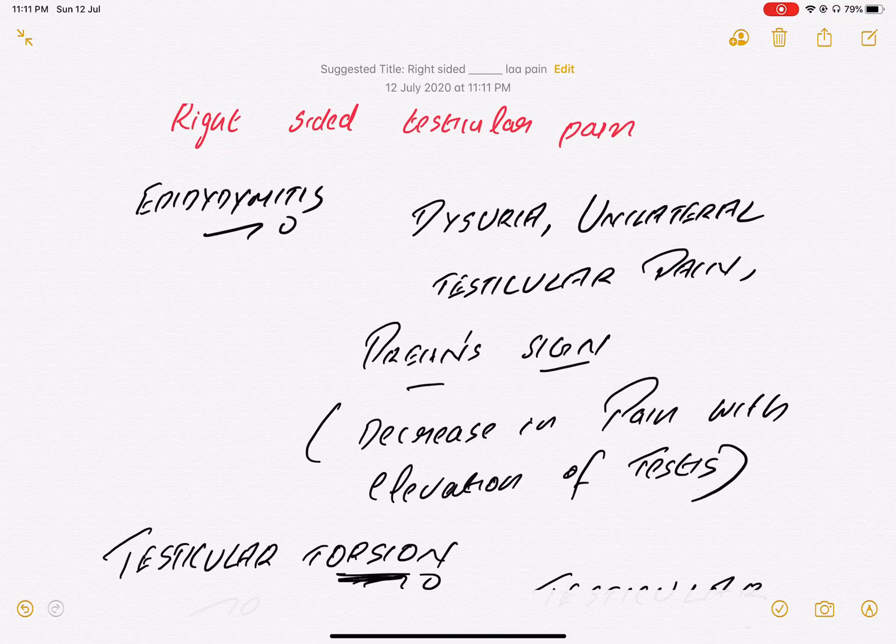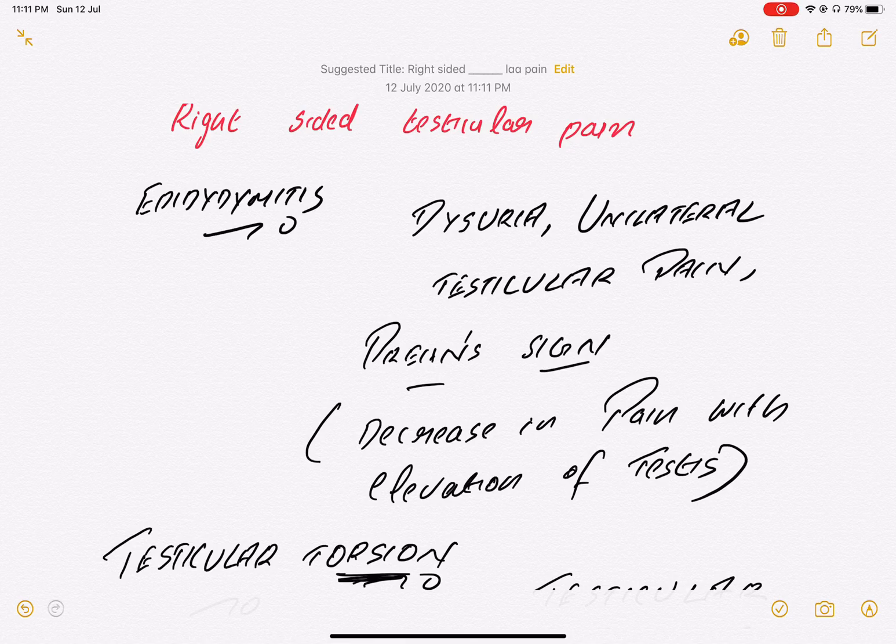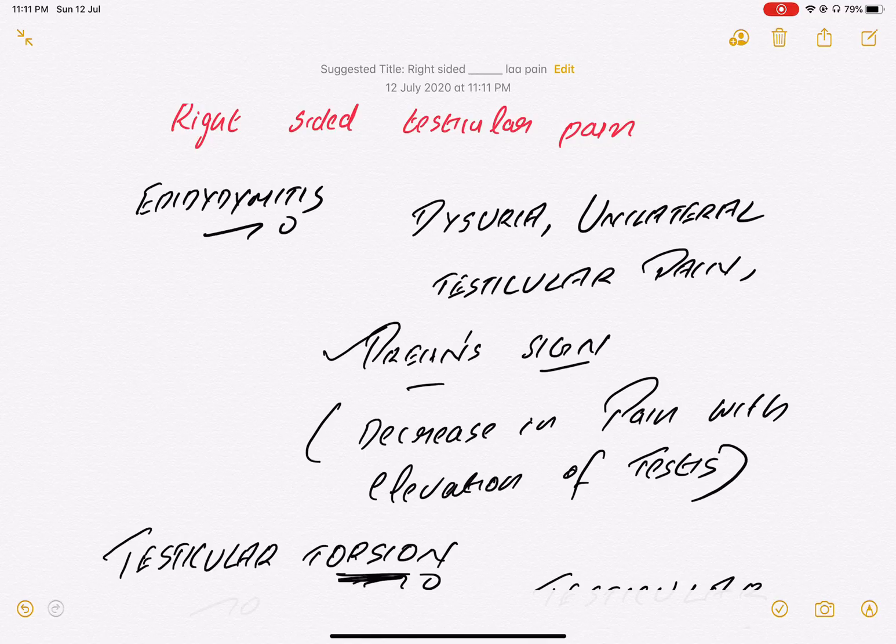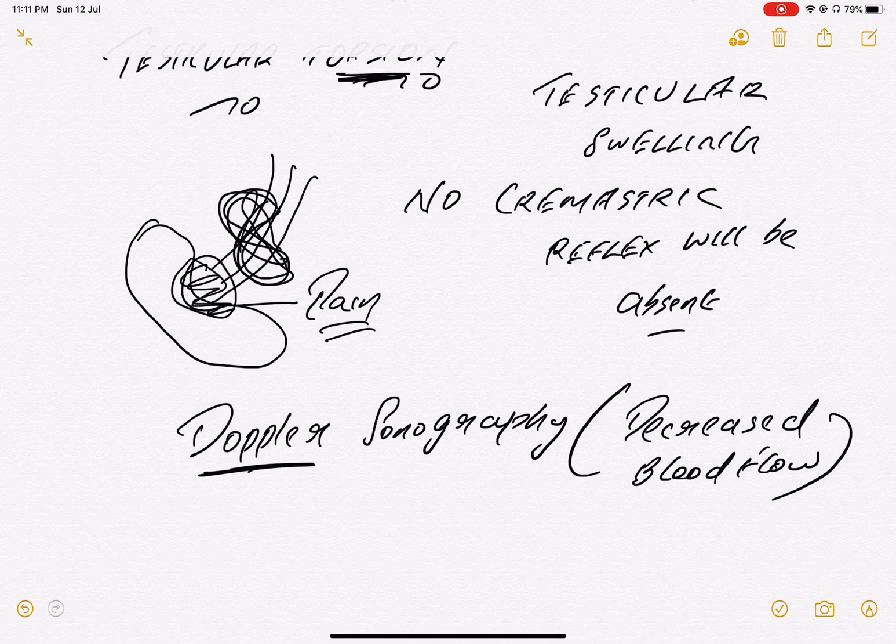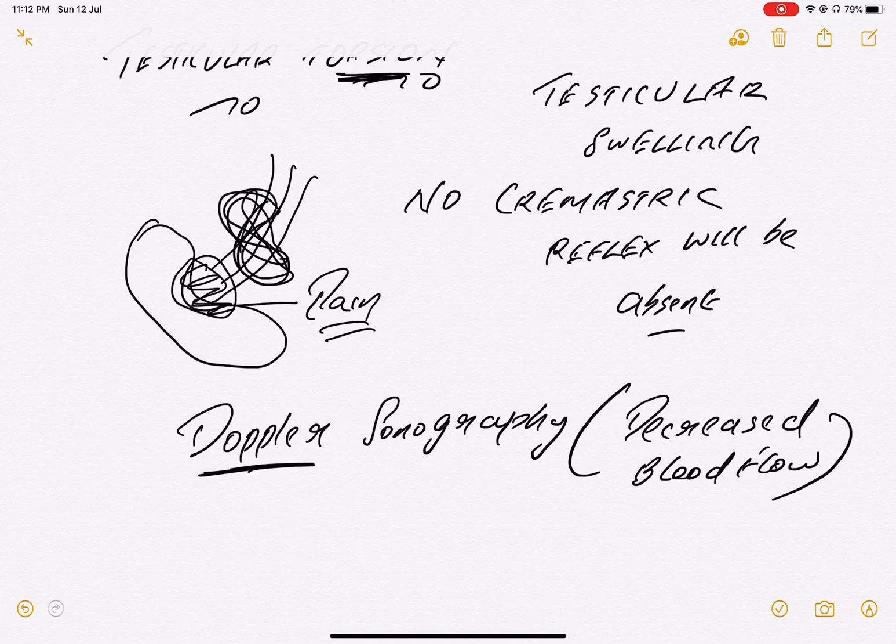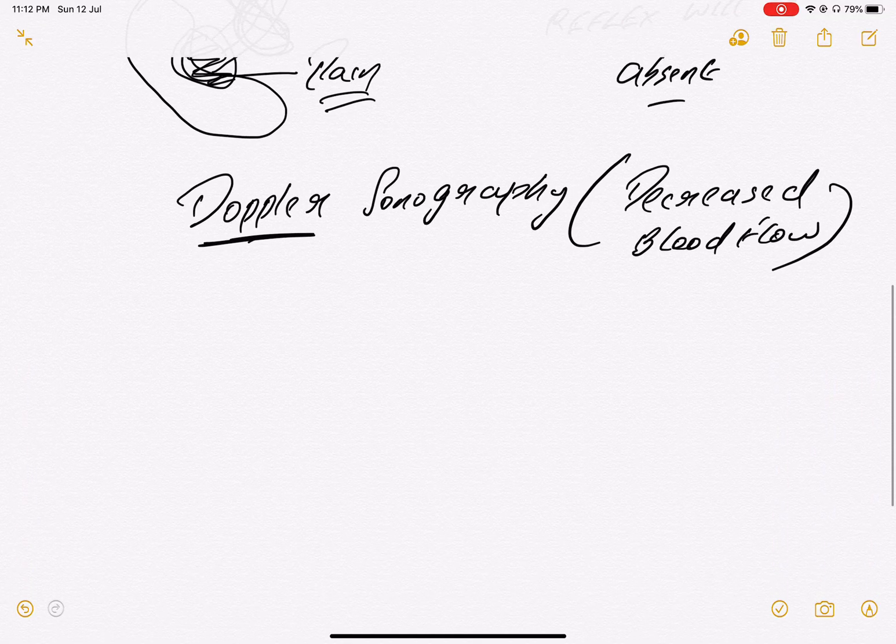So right side of testicular pain not only means kidney stone. It can be epididymitis or testicular torsion. So the sign is Prehn's sign: elevation of testis and pain is decreasing or subsiding, that is sure epididymitis. Pain is not disappearing? Go for torsion and see the cremasteric reflex and confirm it with Doppler study.